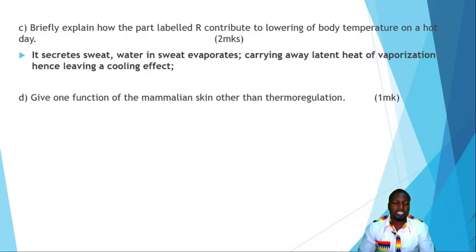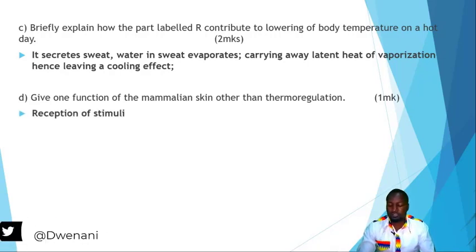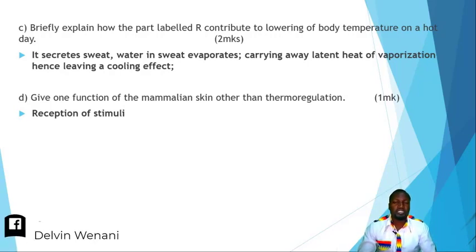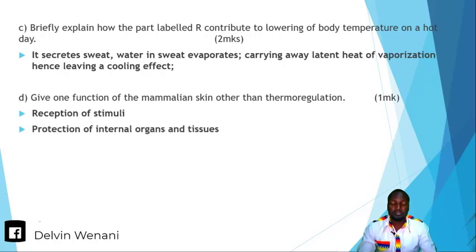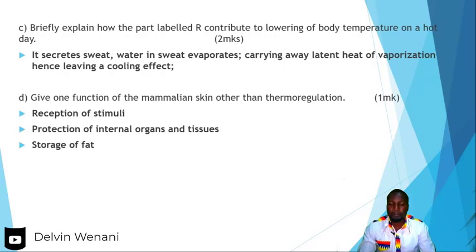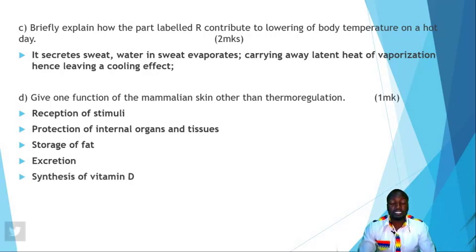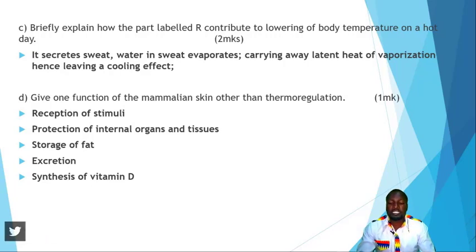Give one function of the mammalian skin other than thermoregulation. The skin acts as a receptor for stimuli — that is the receptor for heat, temperature, and pressure. It also offers protection of internal organs and tissues. Number three, it does the storage of fat. Number four, it also does excretion. And number five, it aids the synthesis of vitamin D. The question requires only one, so any one of those is correct.